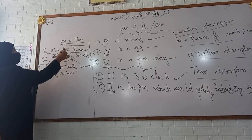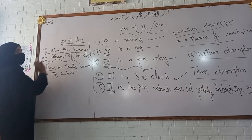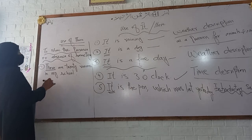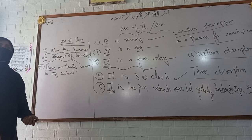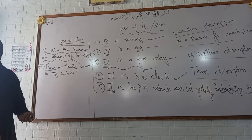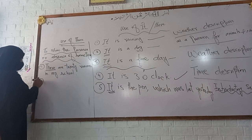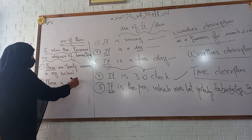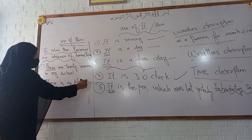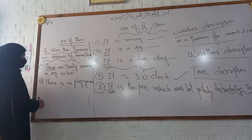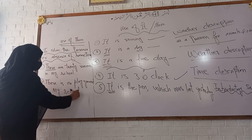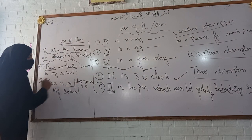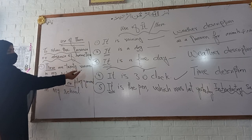This is the rule of using there: to show the presence or absence. And if I say there is no playground in my school, it means that the playground is absent — it is not situated in our school. So we again use there: there is no playground in my school. Here we are talking about the absence of the thing, and in the previous example the presence of the thing.